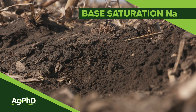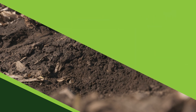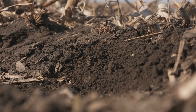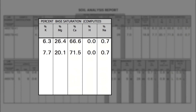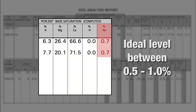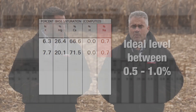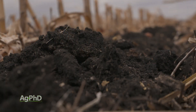One of the most important things you can ever get on a soil test is what's called the base saturation test, and one of the nutrients we want you to look at on that test is called sodium. The sodium base saturation percentage — ideally we'd like to have that between about a half a percent and one percent. But what we want to talk about today is what if it's too low, and especially what if it's too high and you've got a sodic soil.